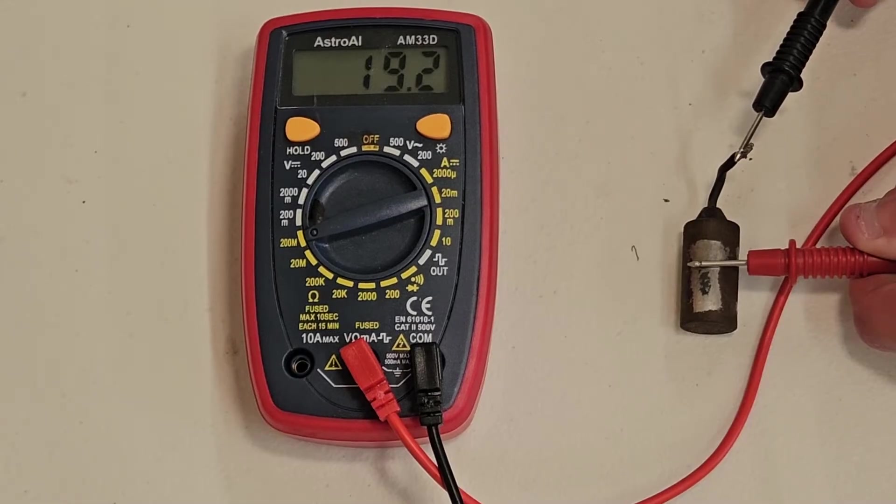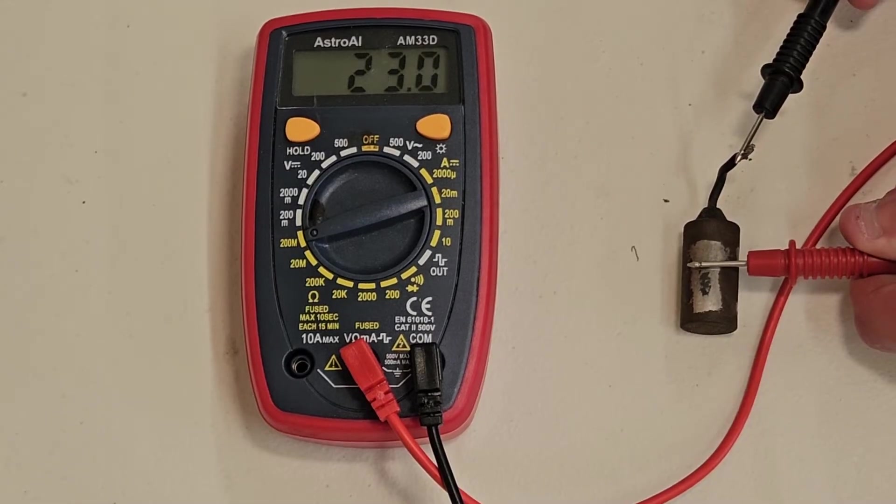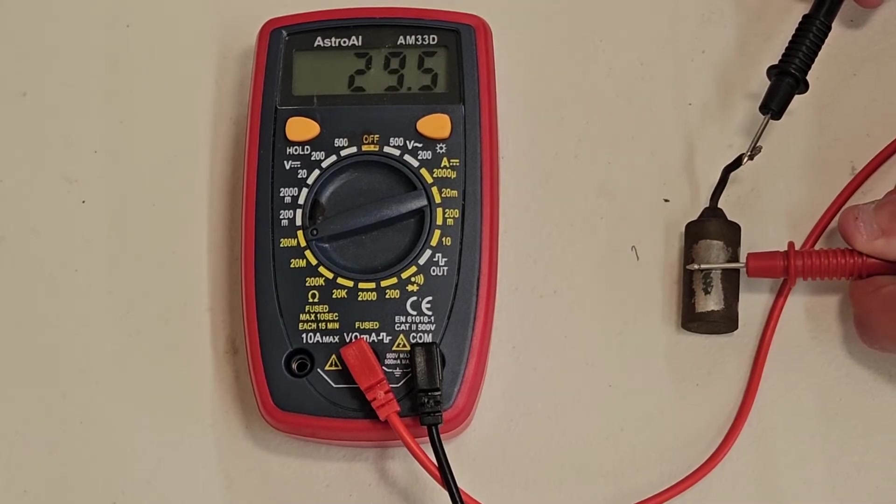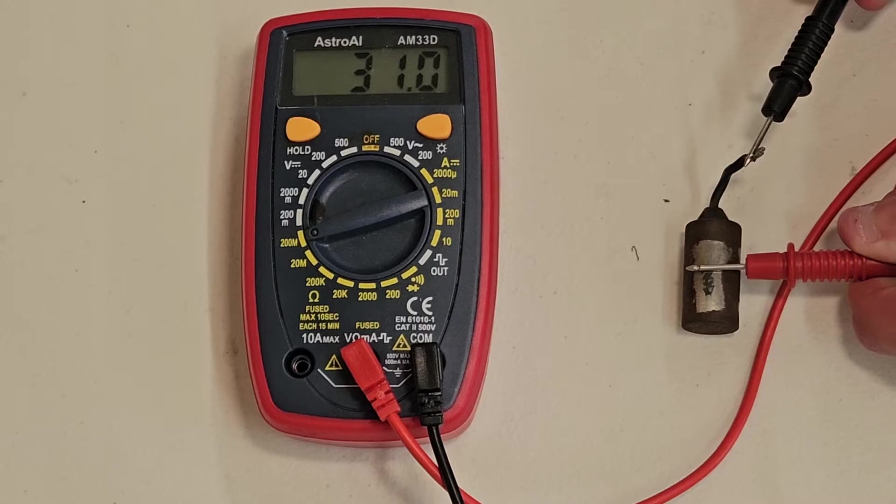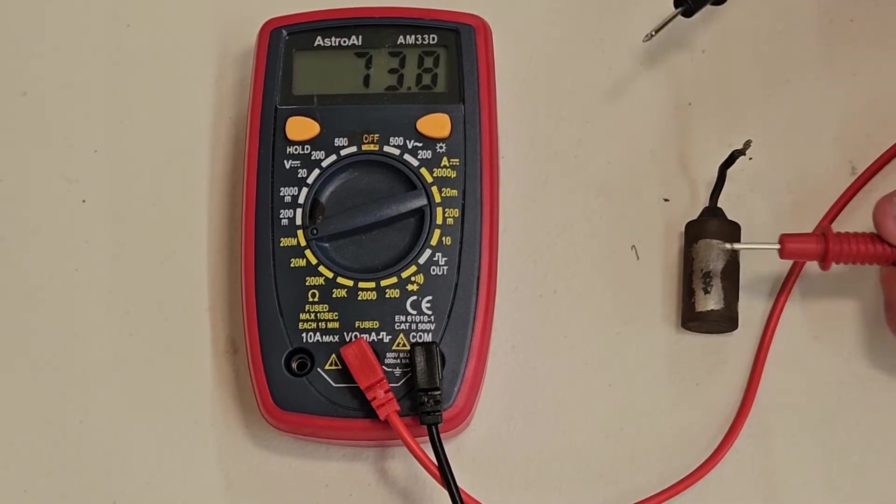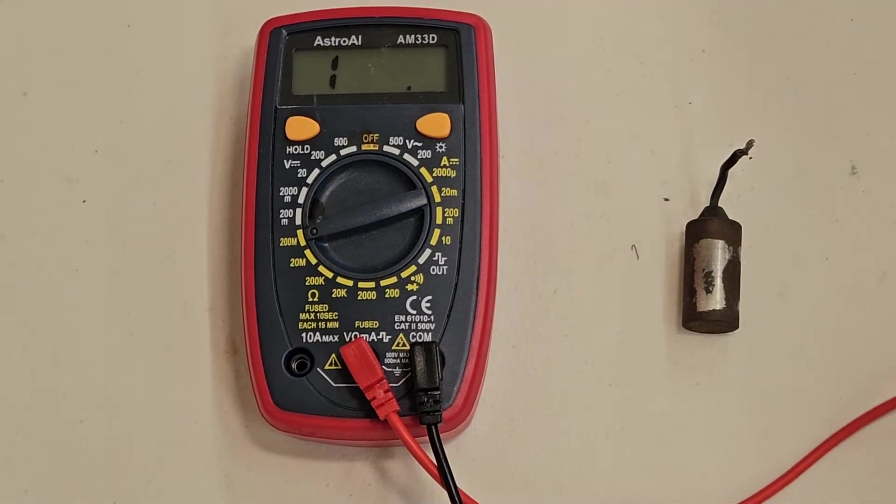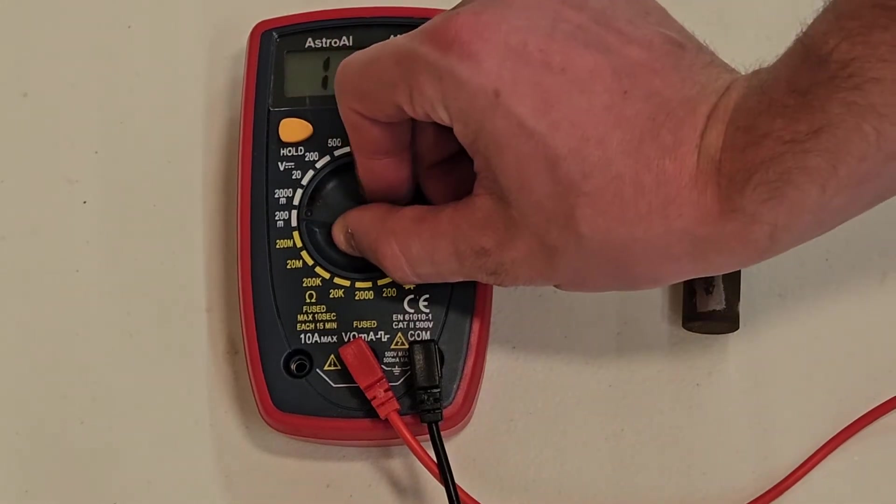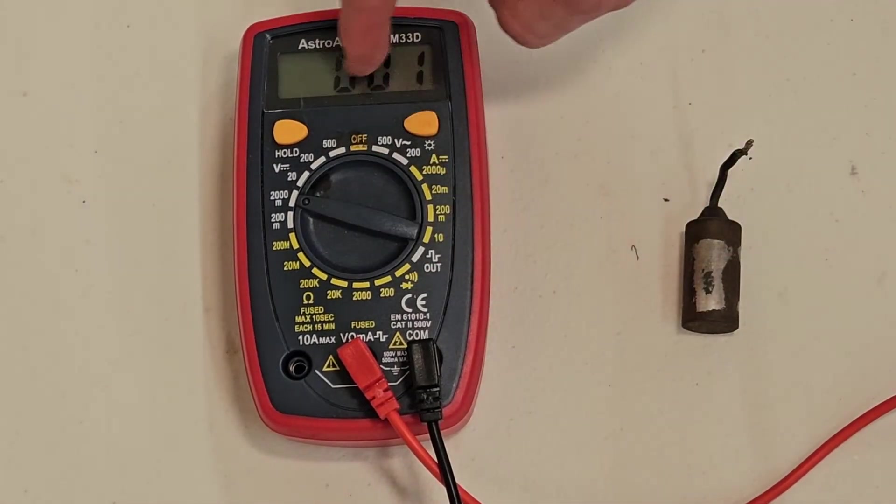You can see we're climbing up right now. We'll let this charge up to about 35. We'll go up to 35, then stop. Now that the multimeter has charged it up, you can set it to DC voltage. We'll set it to 2000M just to get more precision.